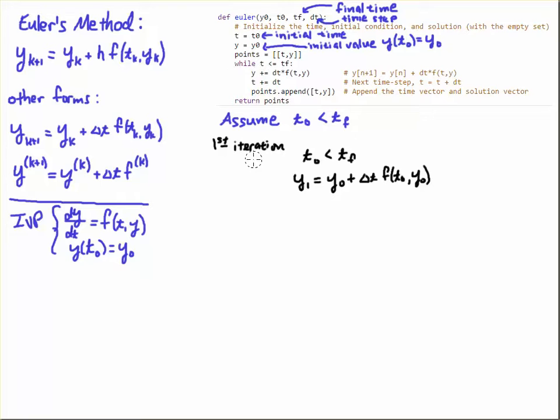The first iteration: I'm assuming that t naught is less than tf (I didn't put a check in for that, just trying to keep it simple). While t naught is less than tf, then y1 is going to equal y naught plus Delta t times the function evaluated at t naught and y naught. Let's put that into code language.